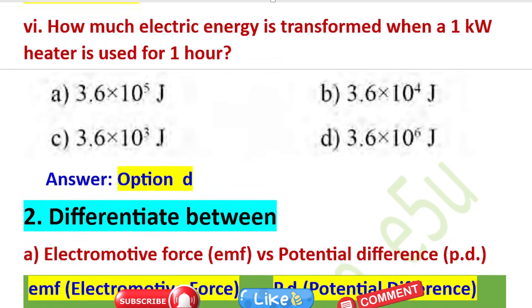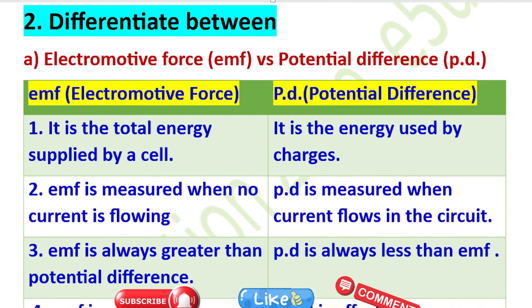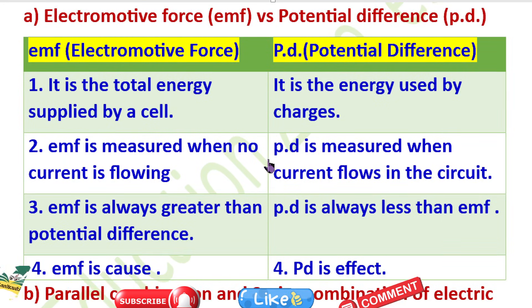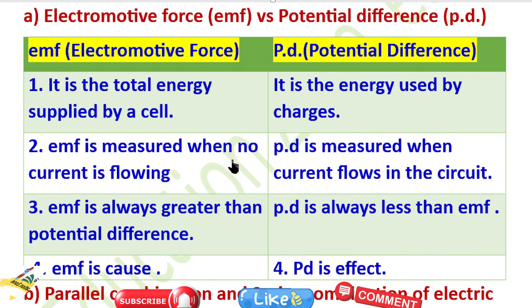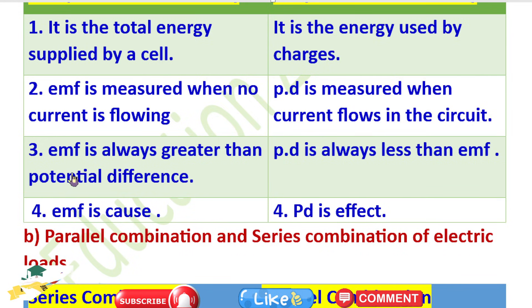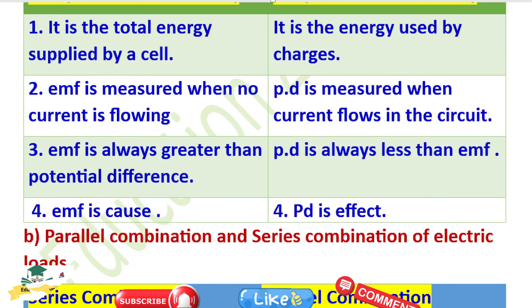Now question number 2: Differentiate between electromotive force (EMF) and potential difference (PD). EMF is the total energy supplied by the cell. Potential difference is the energy used by the charges. EMF is measured when no current is flowing (open circuit), but PD is measured when current flows in the circuit (closed circuit). EMF is always greater than the potential difference, and PD is always less than the EMF. EMF is the cause and PD is the effect.